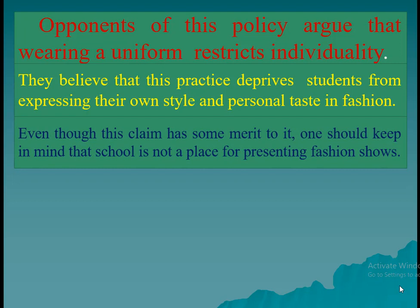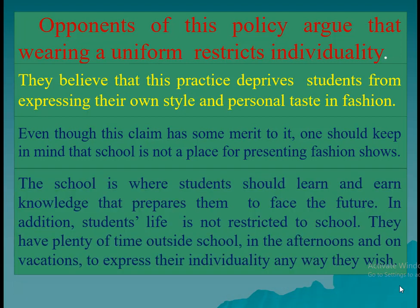Don't forget to support the topic sentence, which includes the opposing arguments, with one or two supporting details: 'They believe that this practice deprives students from expressing their own style and personal taste in fashion.' Then refute these counterarguments: 'Even though this claim has some merit to it, one should keep in mind that school is not a place for presenting fashion shows.' Since raising an objection isn't enough, you need convincing reasons to show it's not valid. For example: 'The school is where students should learn and earn knowledge that prepares them to face the future. In addition, students' life is not restricted to school — they have plenty of time outside school, in the afternoons and on vacations, to express their individuality any way they wish.' So, the refutation paragraph includes two parts: the counterarguments and the refutation.